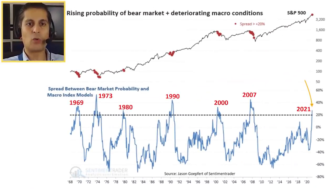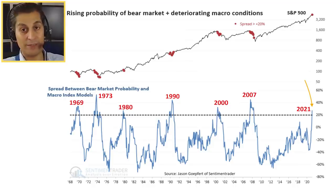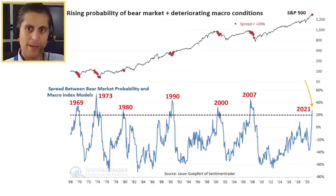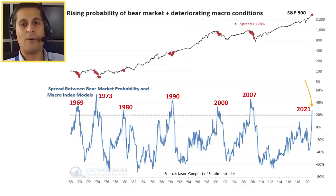That's an interesting, counterintuitive perspective. Let's wrap up with my last question, which is related to one of your predictions. You predicted that a bear market for the stock market may be coming soon. What time frame are we looking at and what effects might that have on Bitcoin? Let me be clear — I'm not expecting a bear market this year. I think a bear market in Bitcoin and the stock market is likely coming potentially in the next couple of years. According to Jason Gepard of Sentiment Trader, there's a rising probability of bear market and deteriorating macro conditions. He says that whenever the spread between bear market probability and macro index models increases over 20%, there is a very high probability of a bear market.